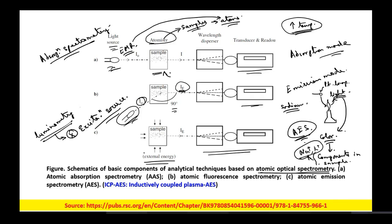This atomic emission spectroscopy is the same thing, but instead of measuring the color, you are recording the spectrum of the light coming out. The color is generated because there is an emission process going on, and hence it is called atomic emission spectroscopy.